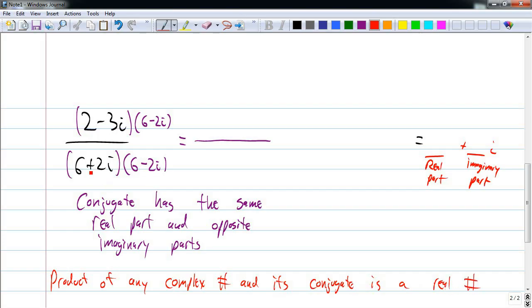So when I multiply out the denominator, I will end up with a real number. We'll get to that in a second. In the meantime, let's multiply out my numerator and remember that I need to FOIL.